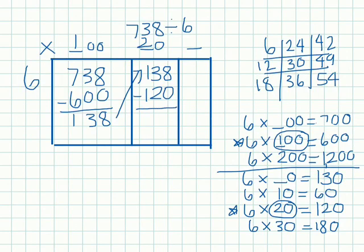And then I'm doing 20 times 6, which I already did over here, is 120. So I will write it in my tens place value section. And then I can subtract. 8 minus 0 is 8, 3 minus 2 is 1, 1 minus 1 is 0. My difference is 18.